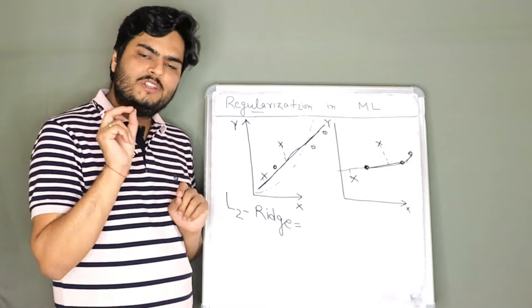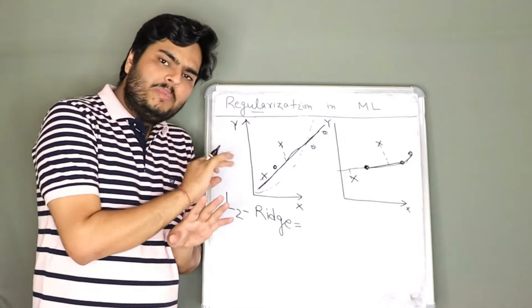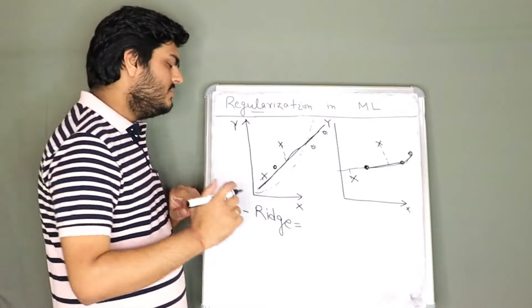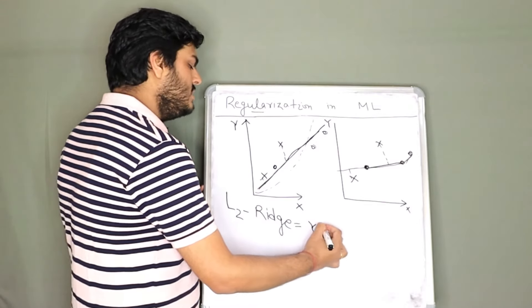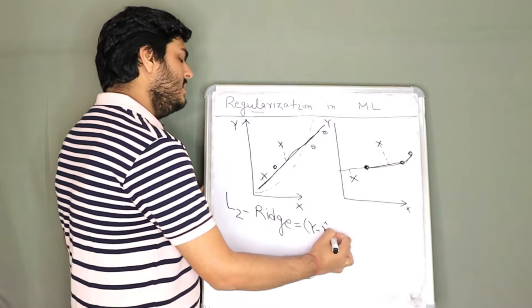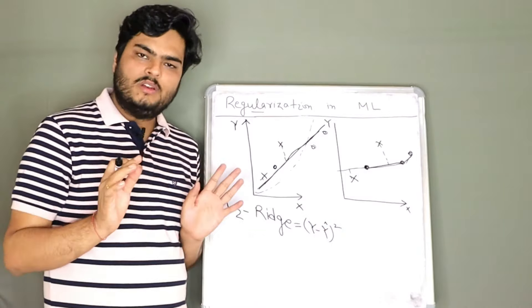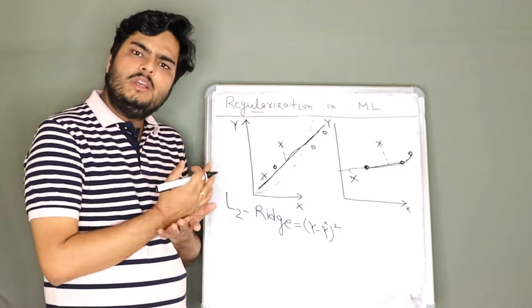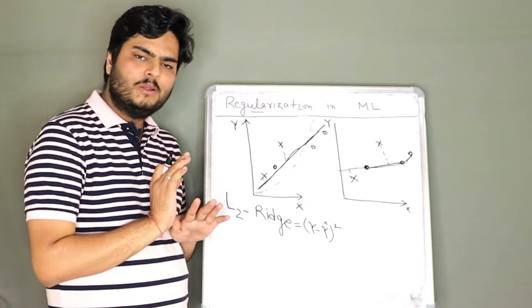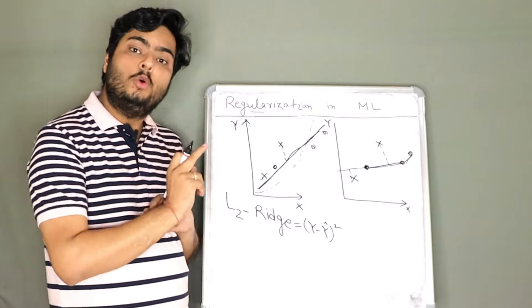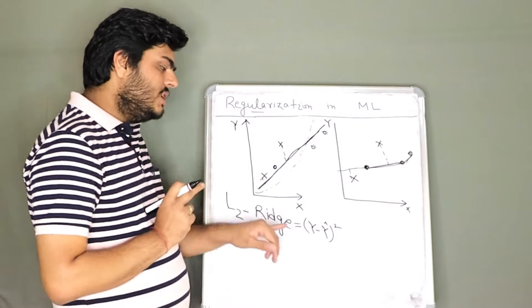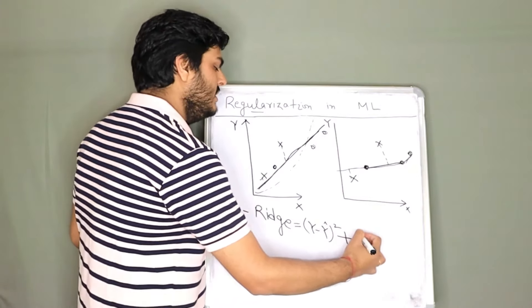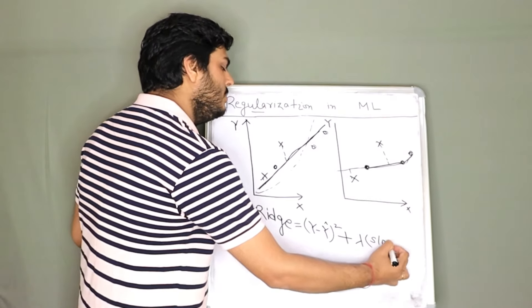In Ridge regression, we redefine the loss function. The loss function is the function optimized to find the coefficient values. Typically that function is the residual sum of squares: (y minus y-hat) squared, where y is the actual value and y-hat is the predicted value. This function is minimized, where y-hat equals beta-0 plus beta-1 times x1, and beta-1 is your coefficient or slope.